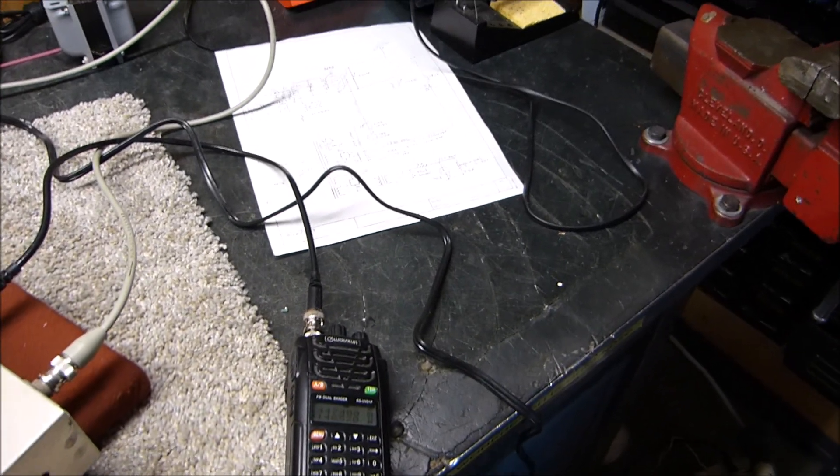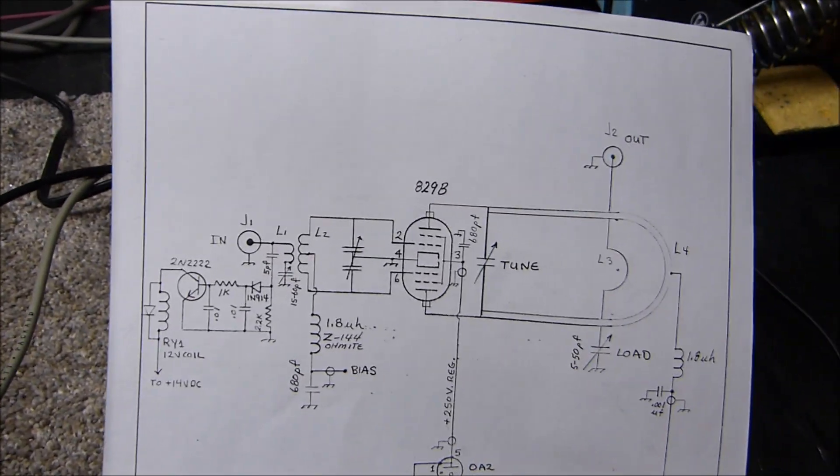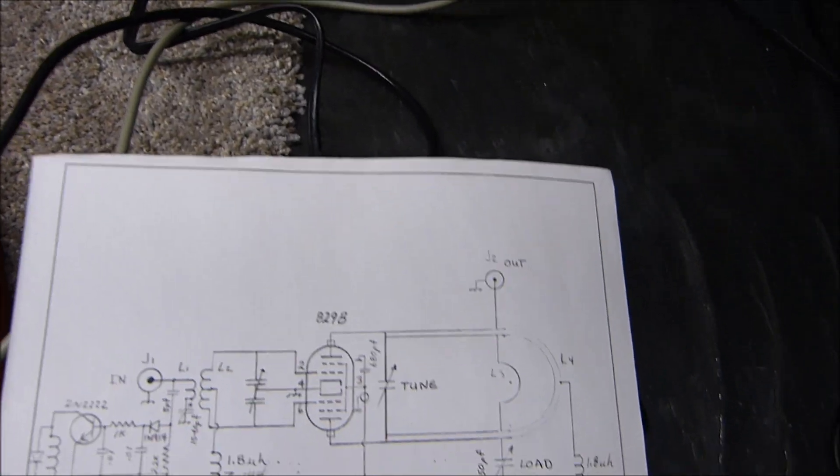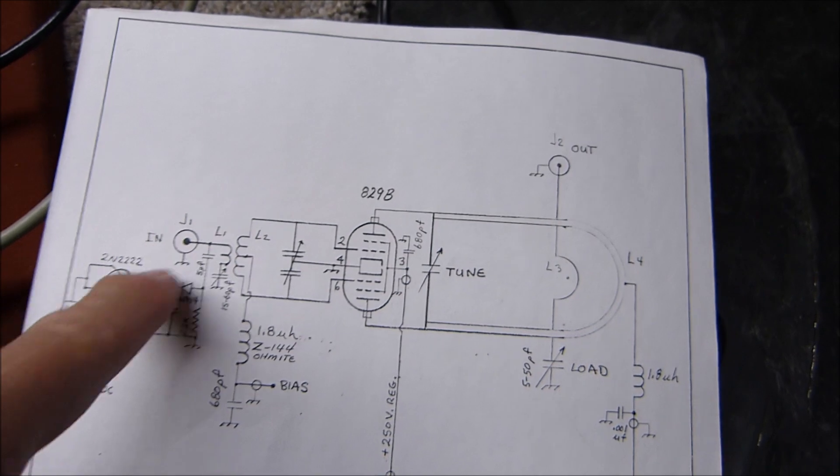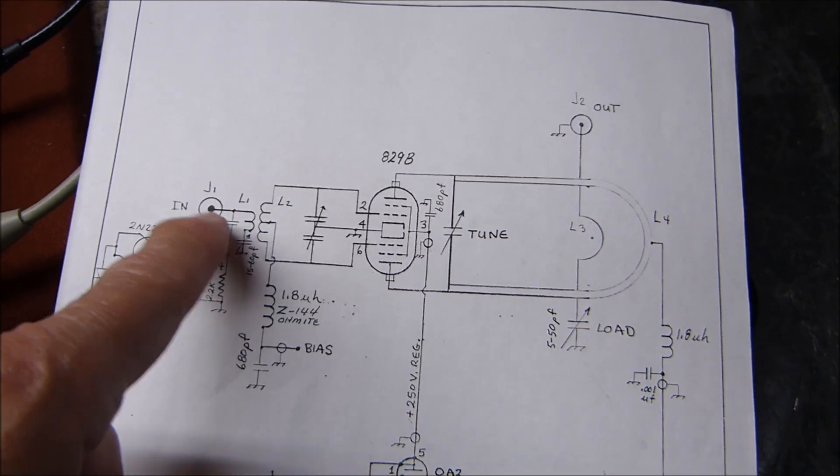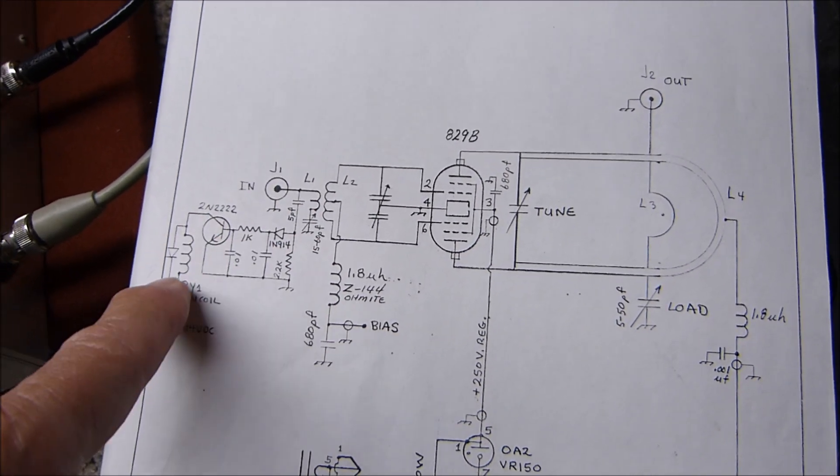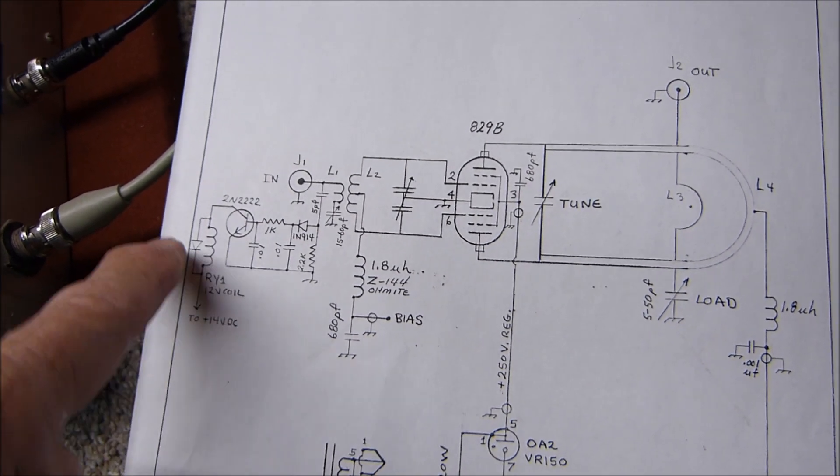Here's a schematic I found that I put inside it going on 40 years ago. I used to draw some really nice schematics. Here's the input, here's a little transistor circuit that samples a little bit of RF and turns on this transistor that pulls in this relay - this is a high voltage relay right here.